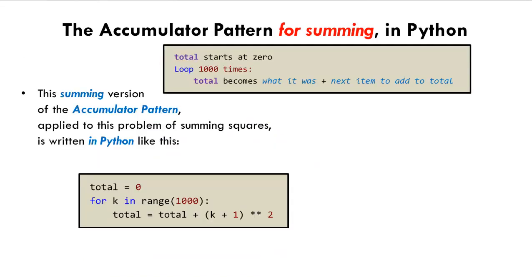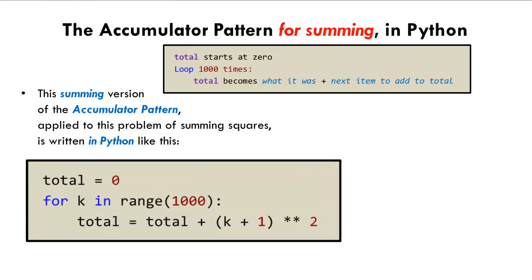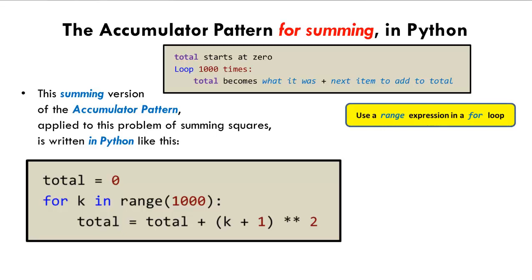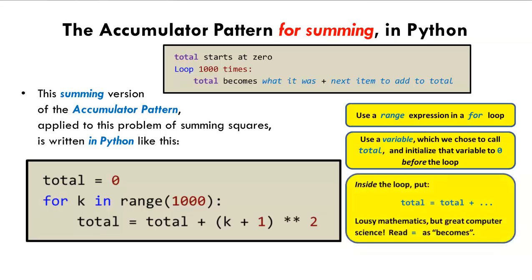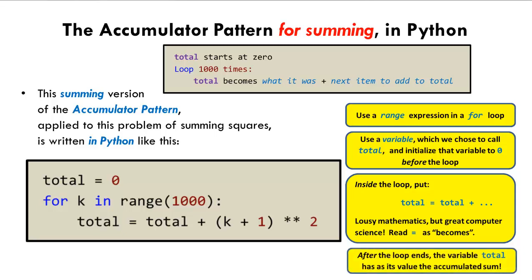Here is the code in Python. Note the three key items. First, we used a range expression in a for statement to make the loop run the number of times that the problem required. Second, we used a variable, which we chose to call total, and we initialized that variable to 0 before the loop. Third, inside the loop we wrote a very strange looking statement: total equal sign, total plus some more stuff. The key is to read that as total becomes what total was plus some stuff. Read that way, it makes perfect sense. When the loop ends, the variable total has as its value the accumulated sum.